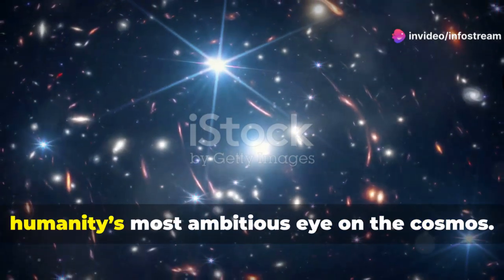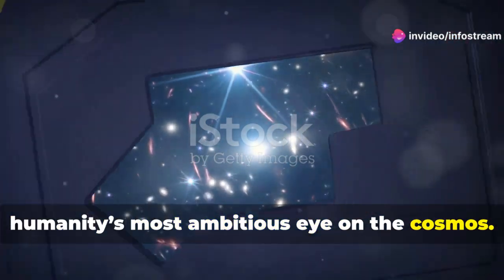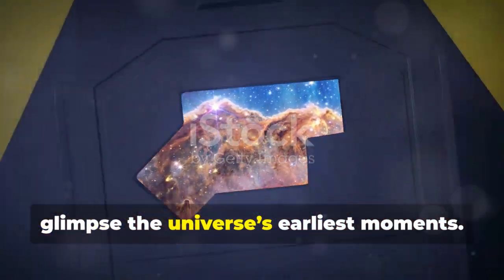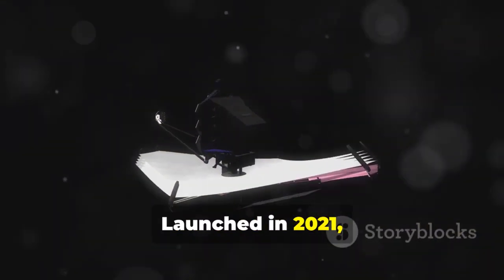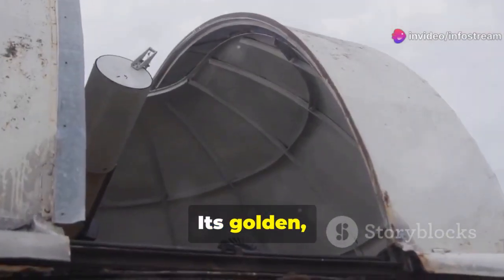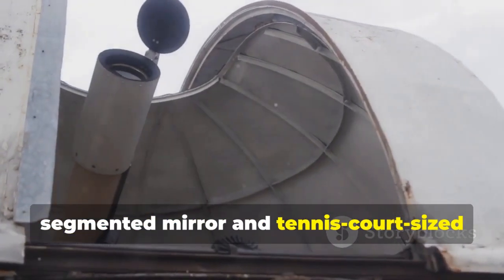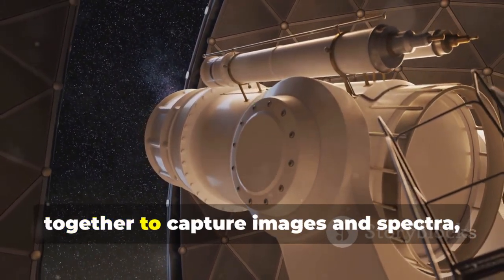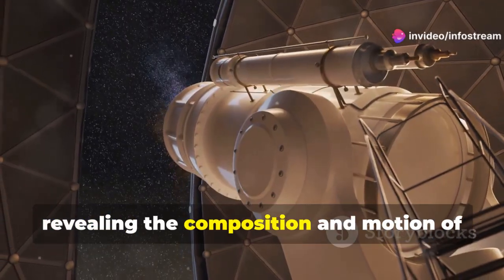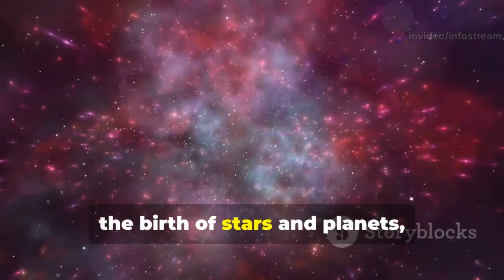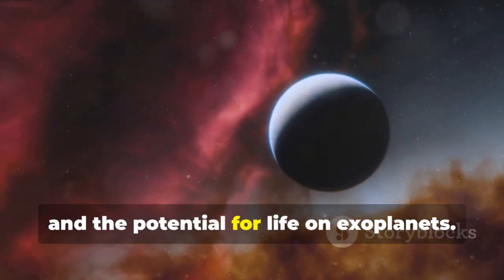The James Webb Space Telescope is humanity's most ambitious eye on the cosmos. Built to see in infrared, Webb can peer through cosmic dust and glimpse the universe's earliest moments. Launched in 2021, it traveled a million miles to its post at L2, where it remains shielded and cold, perfect for its sensitive instruments. Its golden segmented mirror and tennis court-sized sunshield are marvels of engineering. Webb's four scientific instruments work together to capture images and spectra, revealing the composition and motion of distant worlds. Its mission: to study the first light, the birth of stars and planets, and the potential for life on exoplanets.